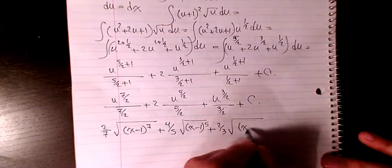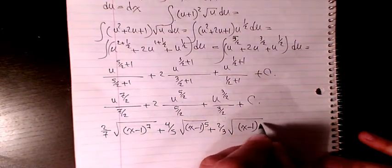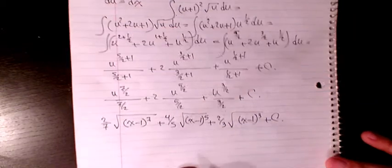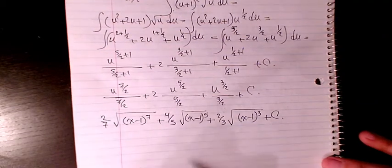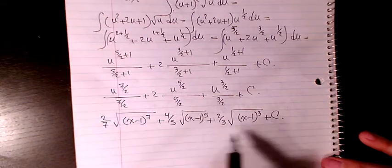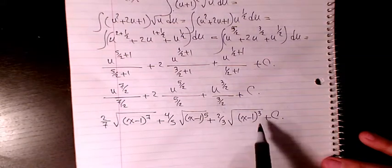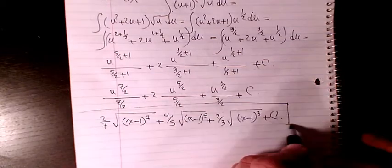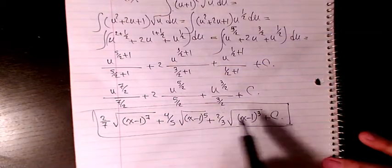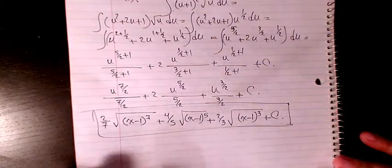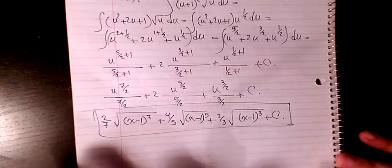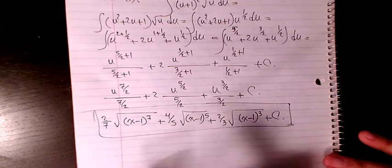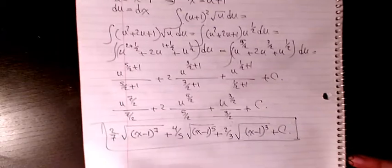Square root of x minus 1 to the power of 3, plus C. That's going to be the final answer. You can also make it simpler by factoring some of this, but most of the time it's going to be acceptable to leave it like that. So that's the final answer.